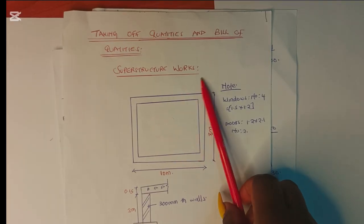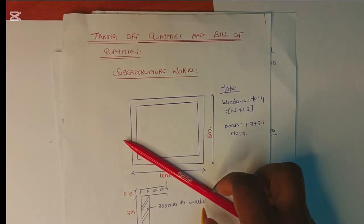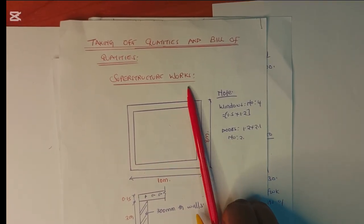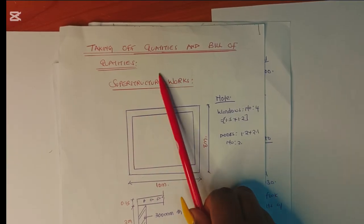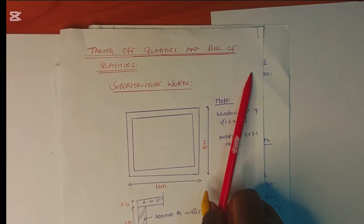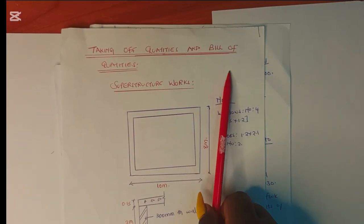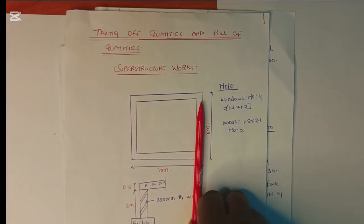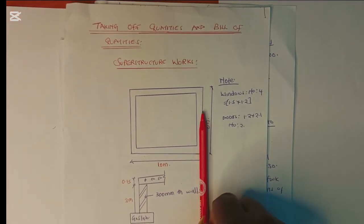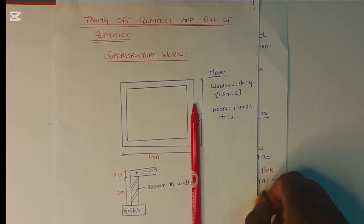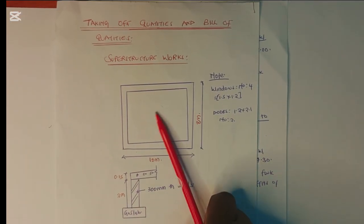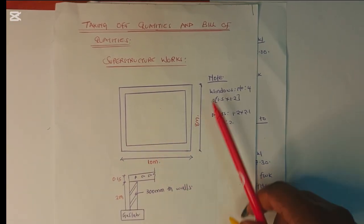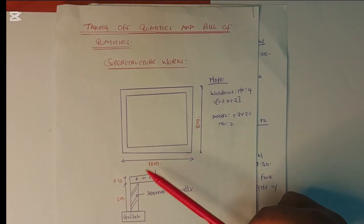A bill of quantities is an important document in construction and civil works. Today's video will cover how we are going to take off quantities and then from that taking off prepare a bill of quantity for a simple superstructure works. Welcome back to my YouTube channel, my name is Engineer China Academy. We have a very simple superstructure wall here — I didn't want to do a complicated one for the first time.